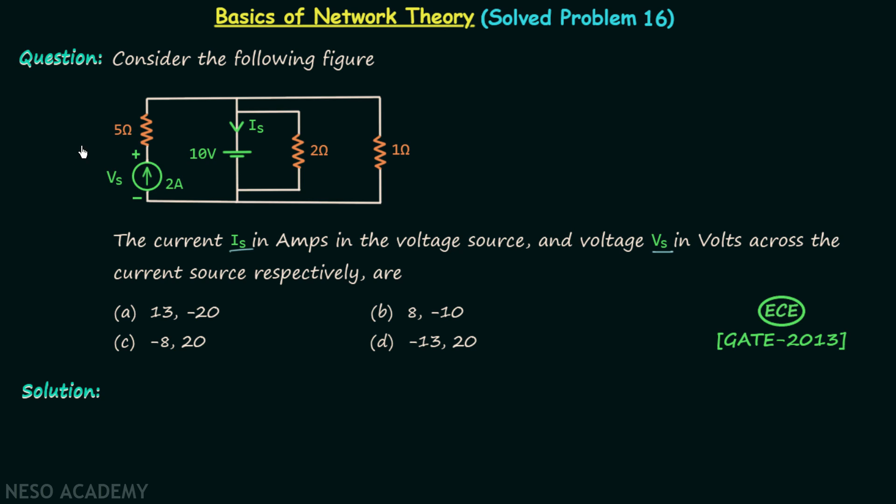So we are required to calculate voltage Vs which is the voltage across the current source providing the current of 2 amperes, and we are required to calculate current Is which is the current through the voltage source providing the 10 volts of voltage. Now pause the video and try to solve the problem on your own.